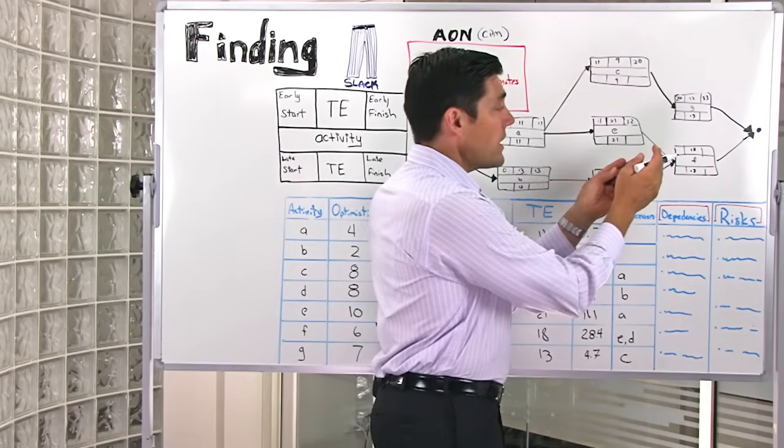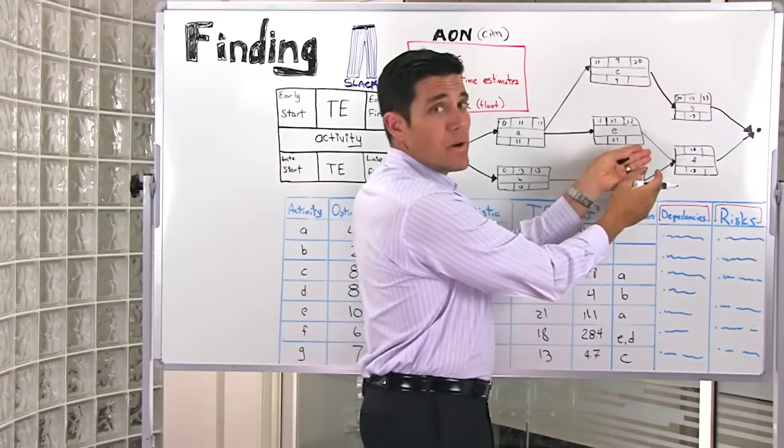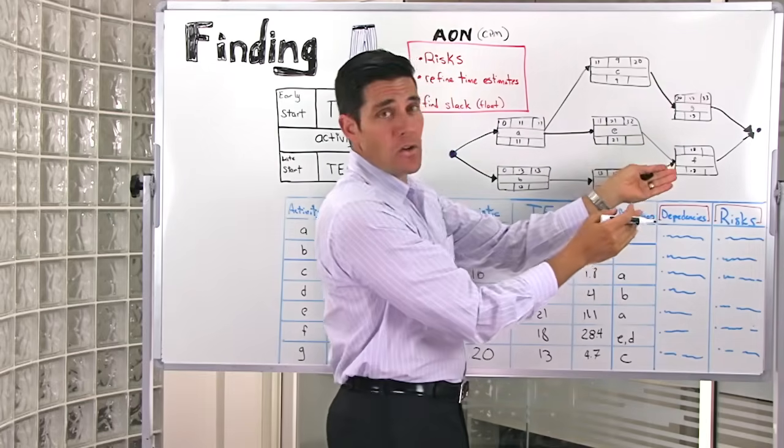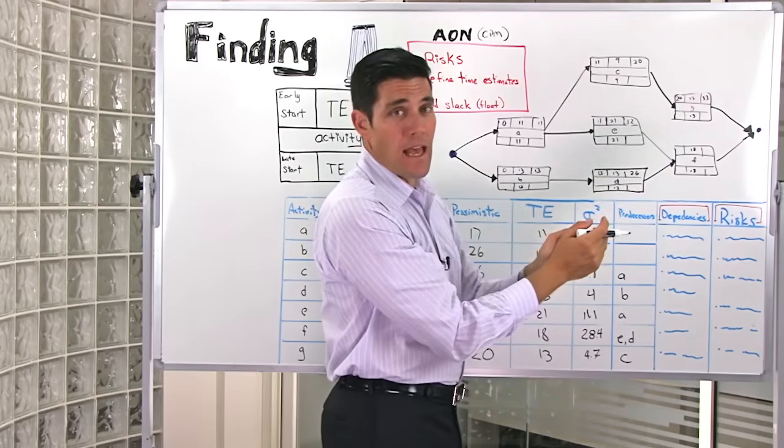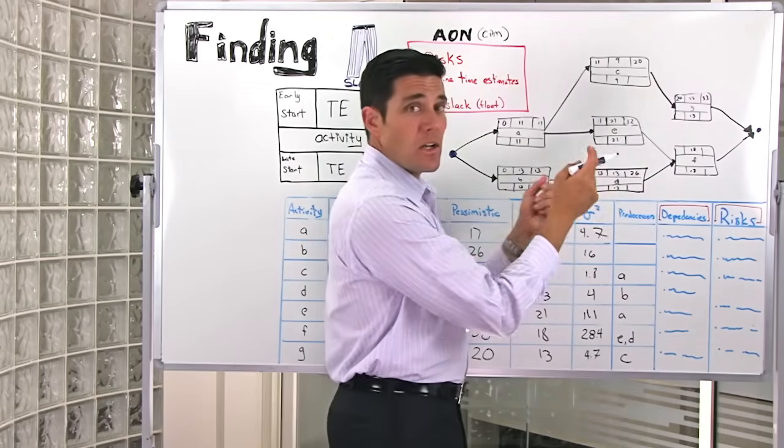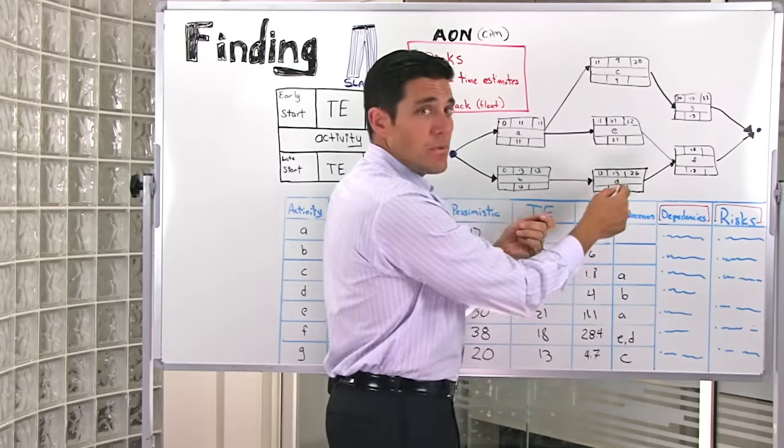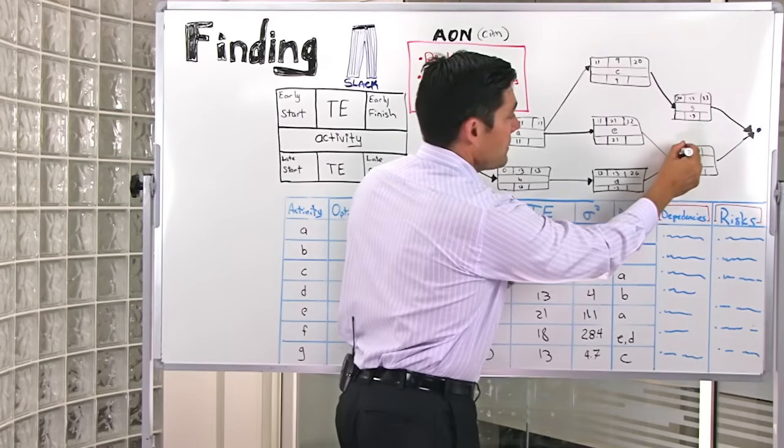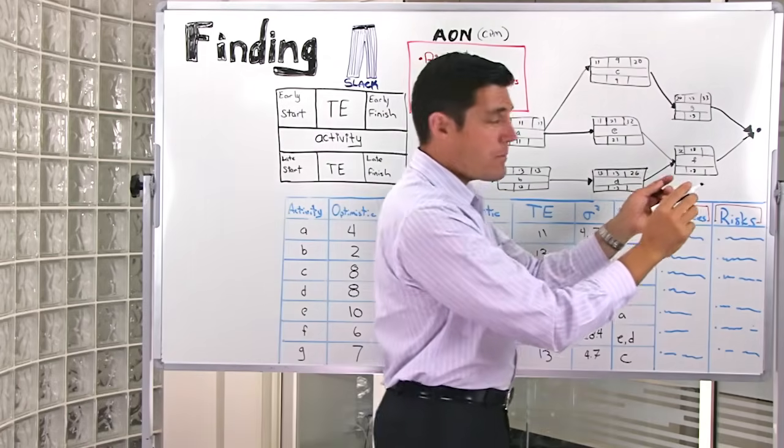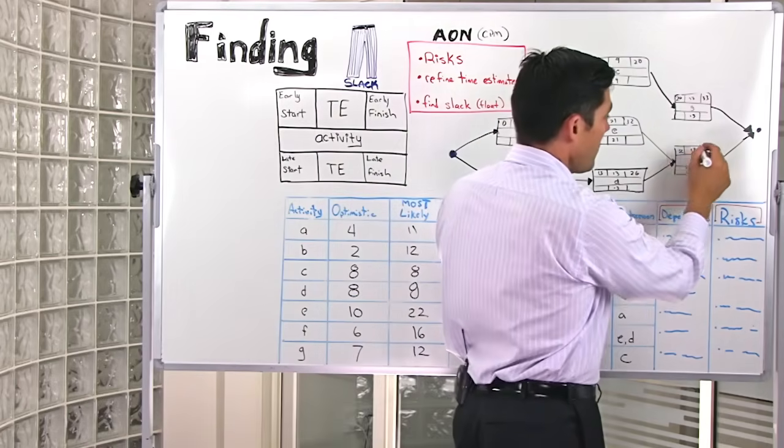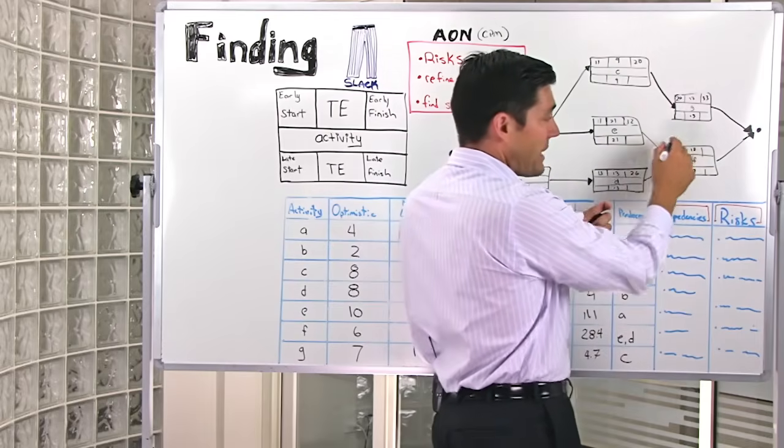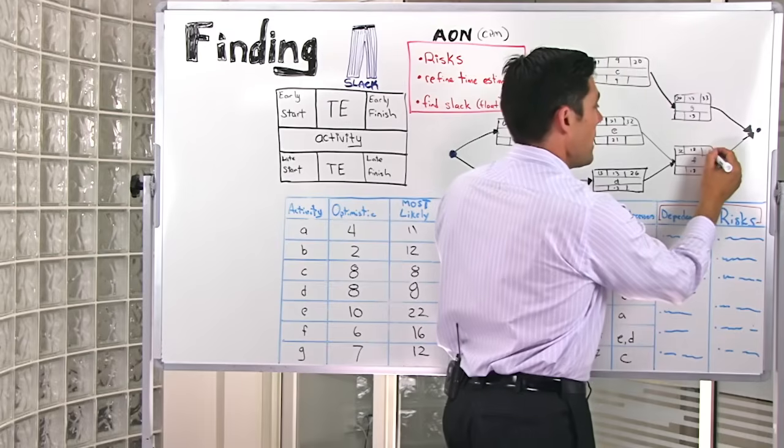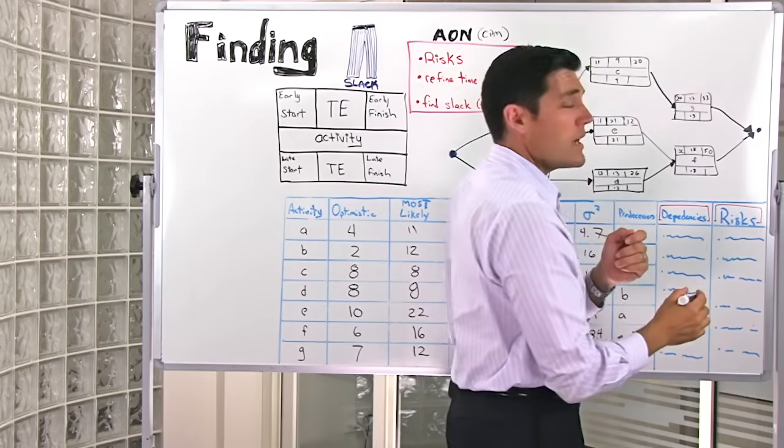Now I've got a problem with activity F, because I've got two predecessor tasks going into it. So how do I determine what is the earliest start for activity F? Quite simply, it's the largest of the numbers between its two predecessor activities, which in this case is going to be E with 32. Now I can finish my forward pass through the diagram, 32 and 18, because that's the expected time for task activity F. That's going to give me a total duration of 50.